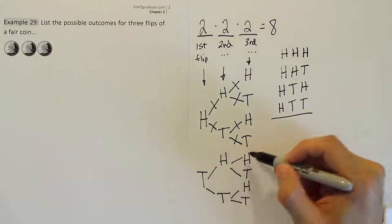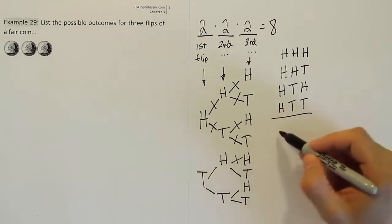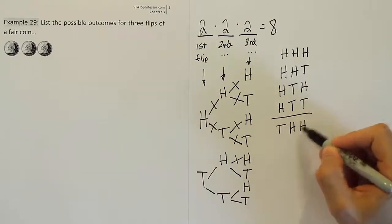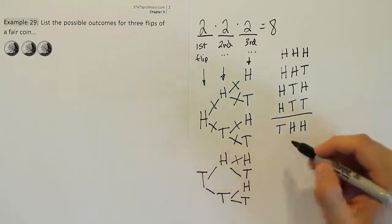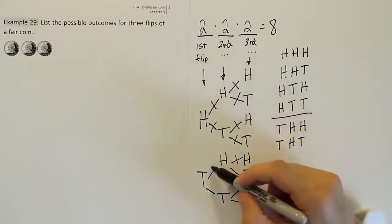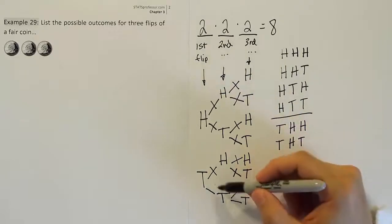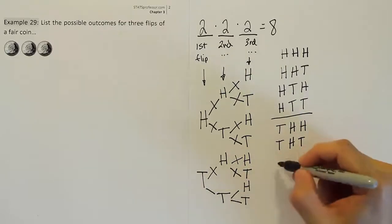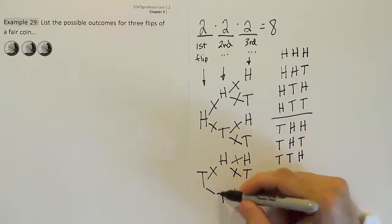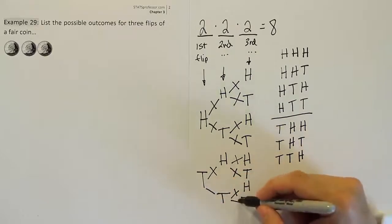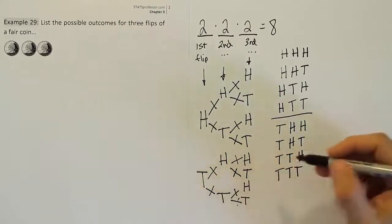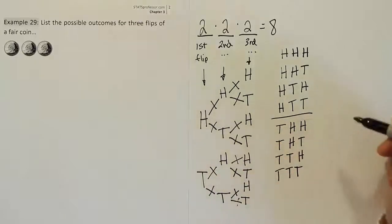Continuing: tails, heads, heads. Then tails, heads, tails. Then tails, tails, heads. And finally tails, tails, tails is our last case. That's your last case and you've used up all the branches.